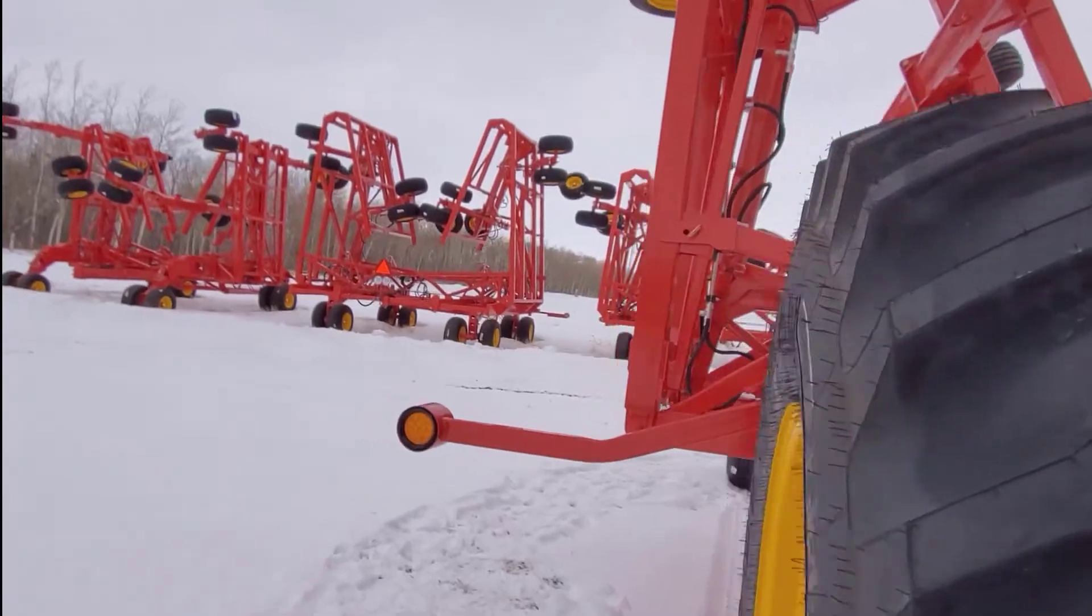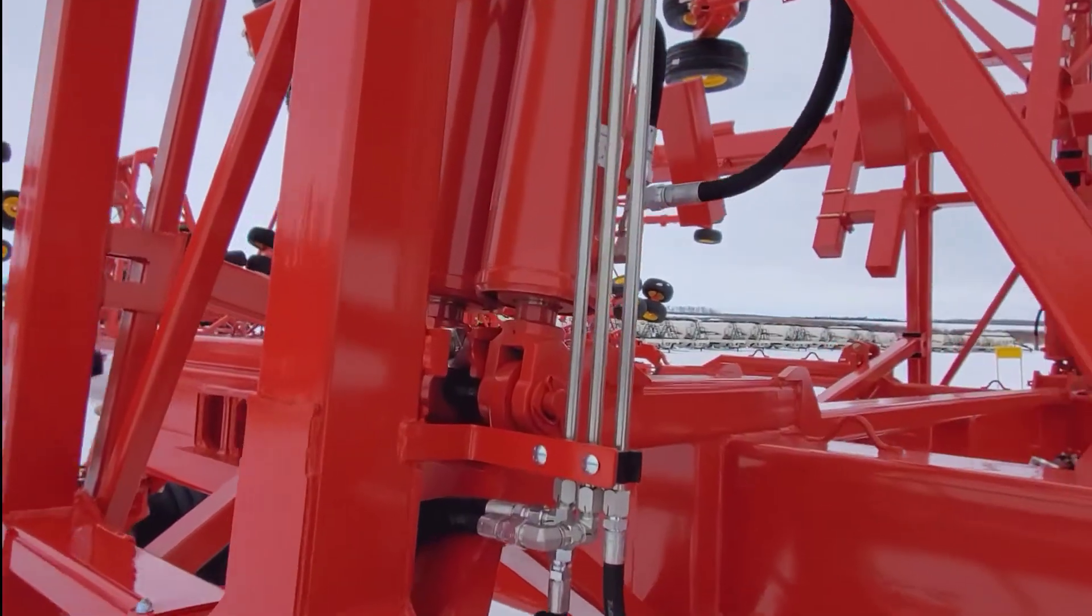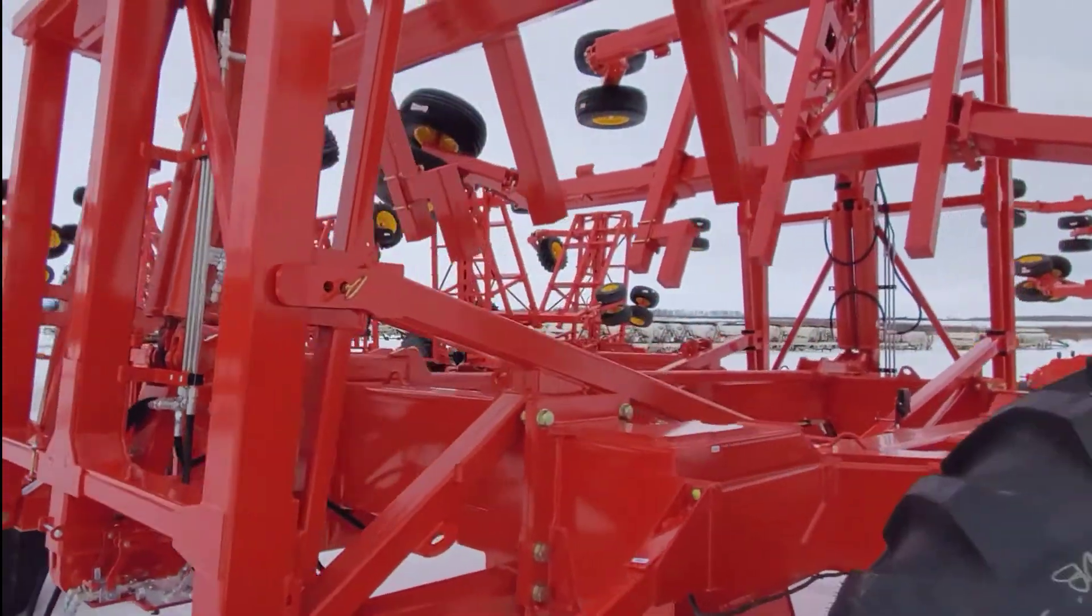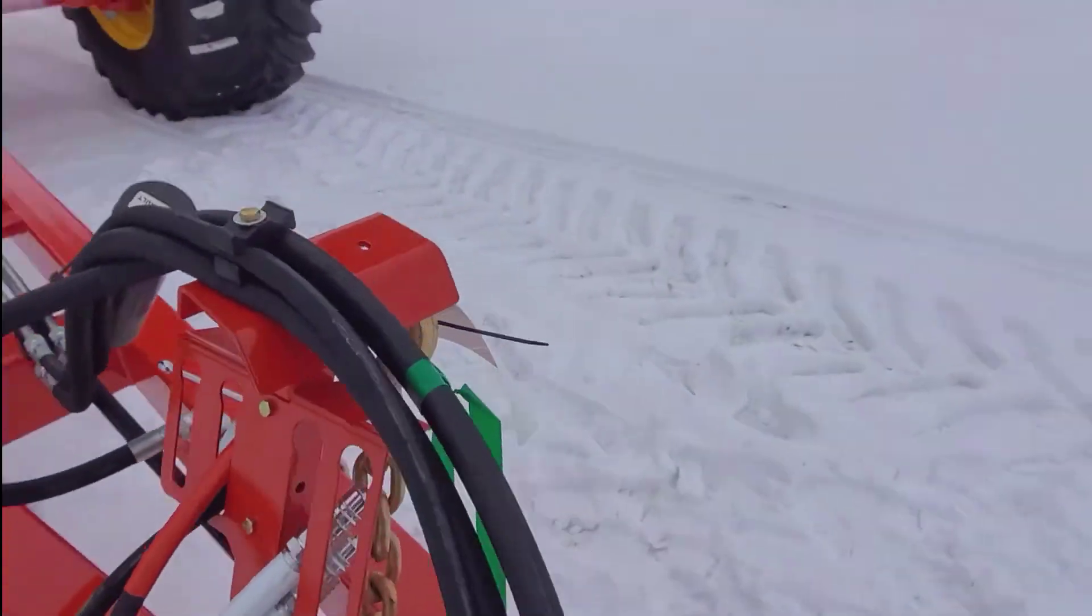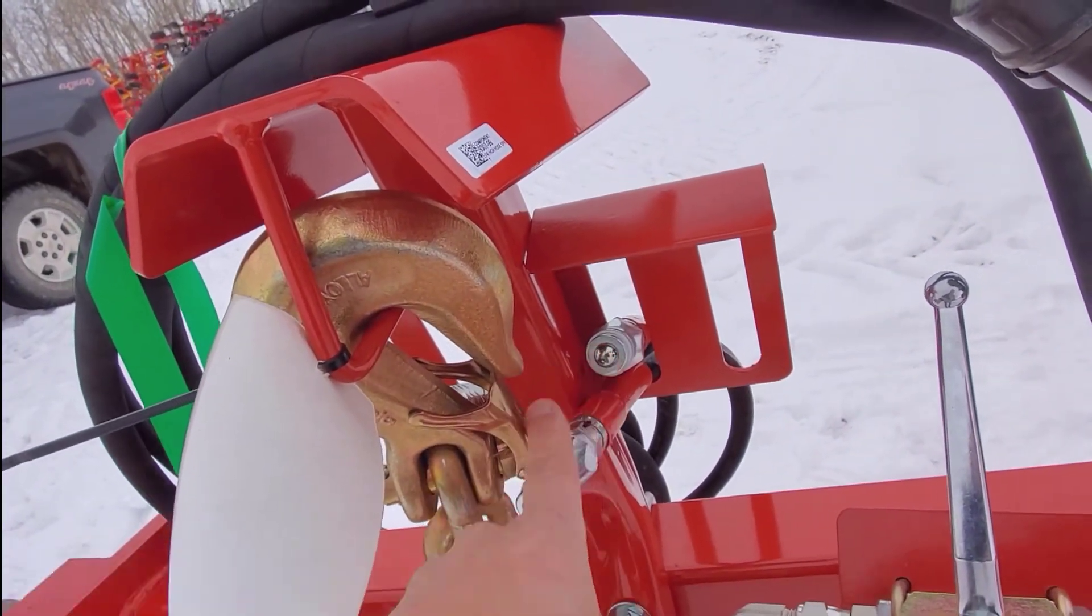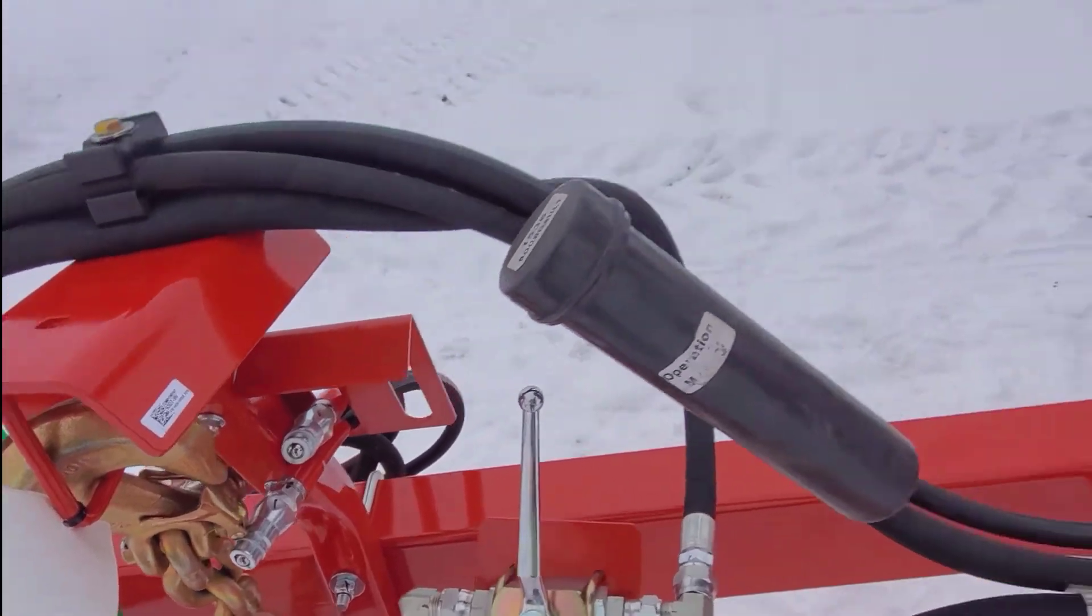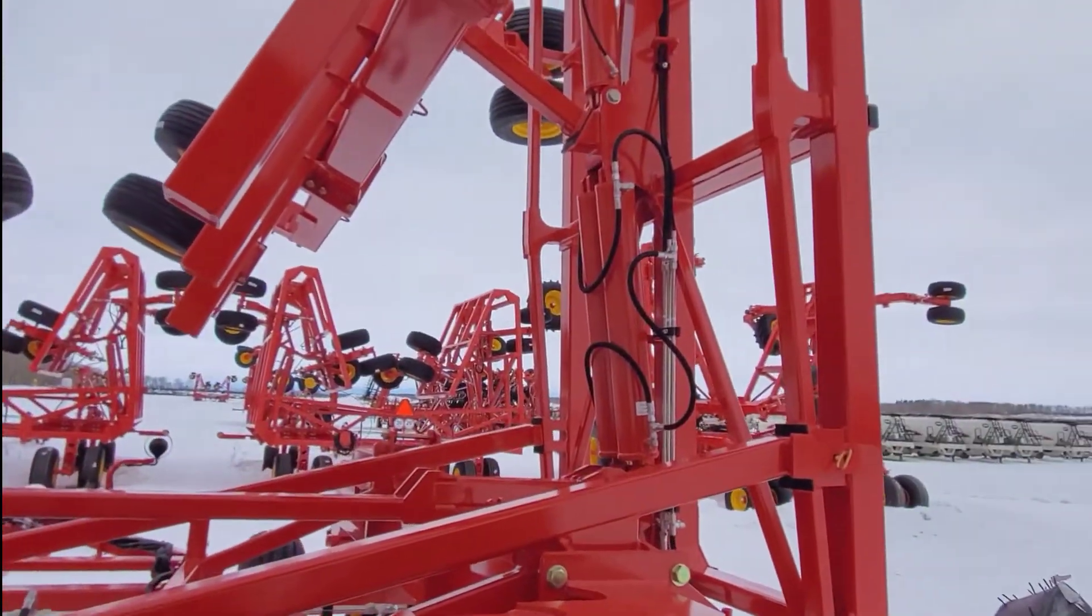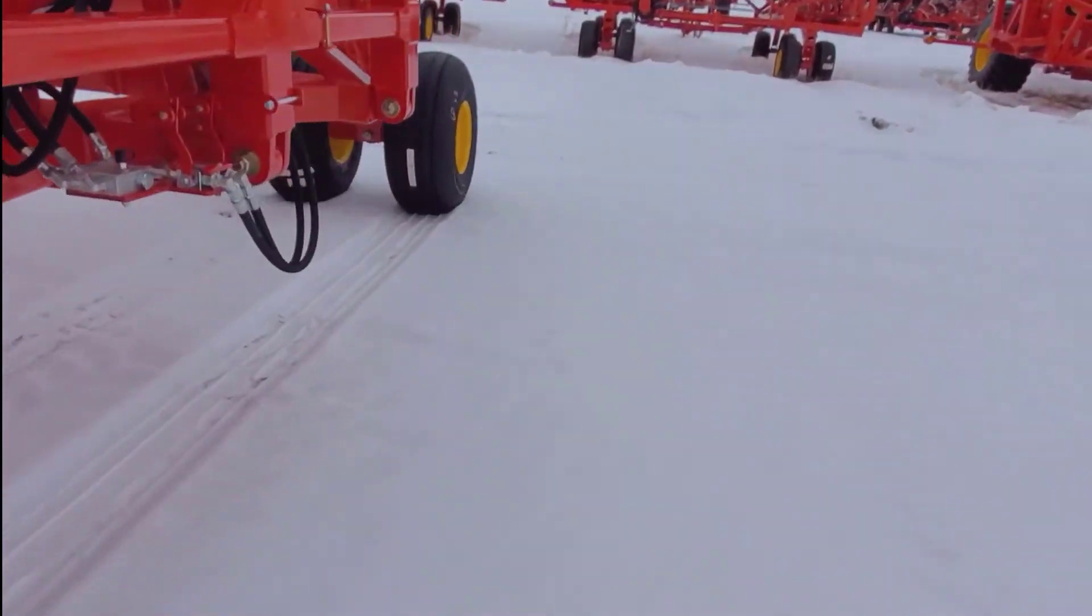One other important thing we're going to point out that was added new is because these cylinders hold a lot of oil, so there's a lot of oil in there. When you bring it in from the cold like this into a warm shop, these ball couplers are supposed to leak a little bit of oil to allow that pressure that's built up in those cylinders to dissipate.